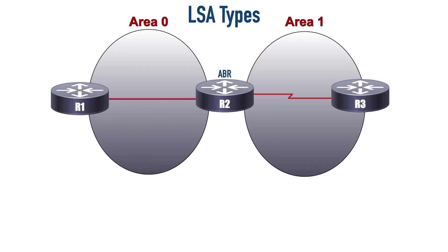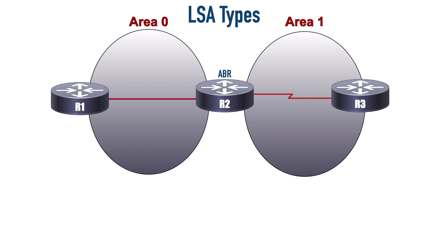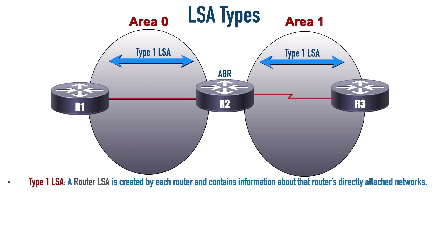Let's say we've got a network like you see on screen with a couple of areas. The router sitting between a couple of areas, with one or more interfaces in one or more areas, is called an Area Border Router or ABR. Within each area - Area 0 and Area 1 in this case - we have a link state database for each area. So the ABR actually has a couple of link state databases, one for Area 0 and one for Area 1. Let's talk about how LSAs are used to educate everybody in an area about the networks available in that area and in other areas. To begin with, let's talk about a Type 1 LSA, called a Router LSA.